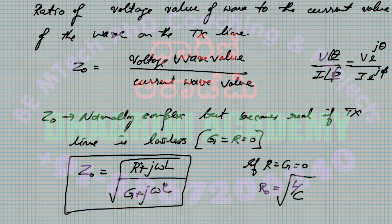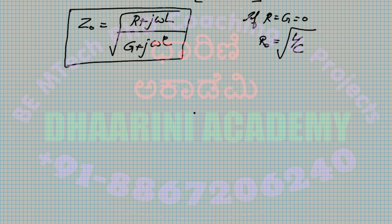Remember that in all equations, R, L, G, C values are per unit length. For a two-wire transmission system that is lossless, the typical value of R₀ is anywhere around 350 to 550 ohms — that is the standard industry value.